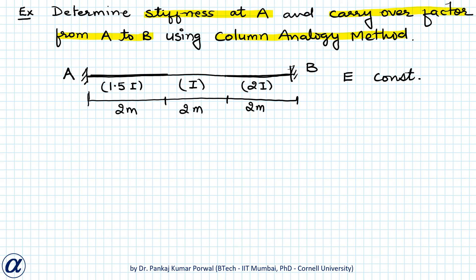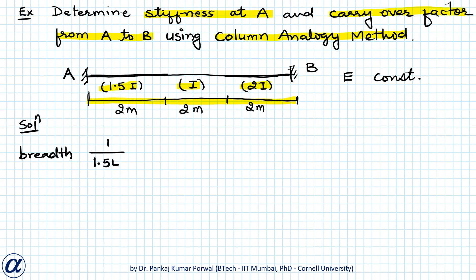The first step in the column analogy method is to draw the analogous column. The analogous column is a short column with width of cross section equal to the length of the beam, that is 6 meters. Because I is varying along the length of the beam, the breadth of the analogous column cross section will vary. The breadth for the first 2 meters will be 1 upon 1.5EI, which equals 4/3EI. For the next 2 meters it will be 1/EI, and for the last 2 meters it will be 1/2EI.